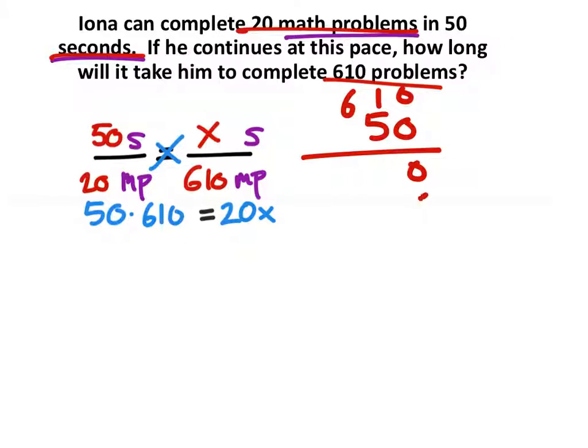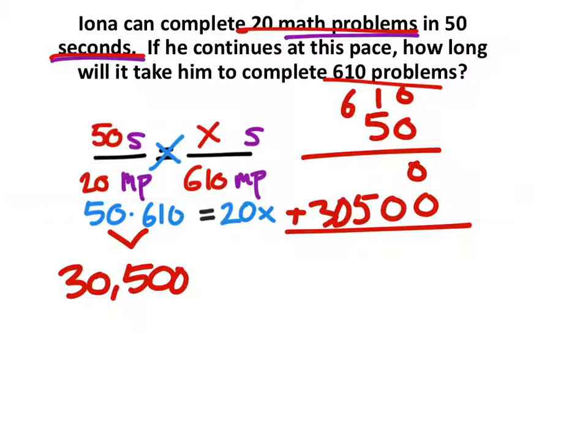So 0, 0. 5 times 0, 0. 5 times 1 is 5. 5 times 6 is 30. So I've got, from these two, 30,500. I just added those two together, by the way.